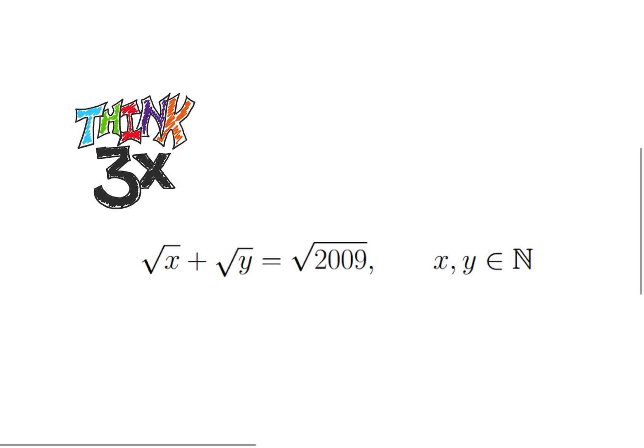So we have x, y are elements of the natural numbers, so 1, 2, 3, 4, etc. And we have the square root of x plus the square root of y is equal to the square root of 2009. And we want to find all of our answers. So pause the video if you want to solve on your own, otherwise we're going to jump straight into a solution.